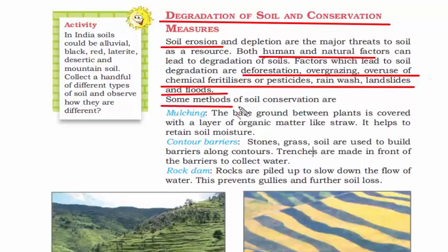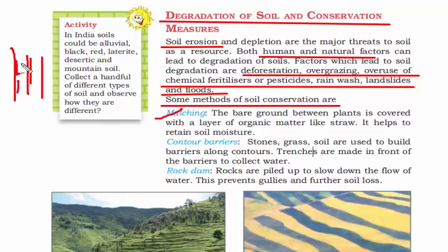Now let's talk about methods to prevent soil erosion. The first method is mulching. Between crops that are sown, you put a layer of organic matter in the spaces. This helps retain soil moisture — the organic matter acts as a reserve of moisture that plants can use later on.